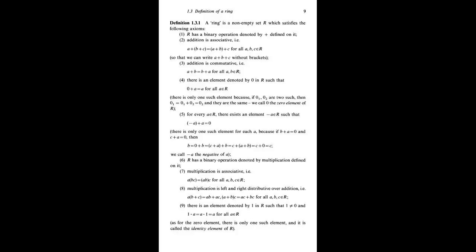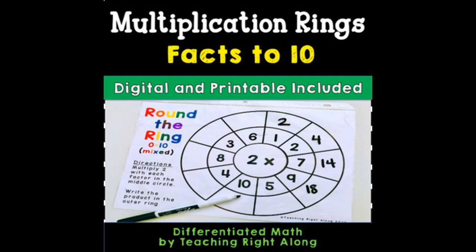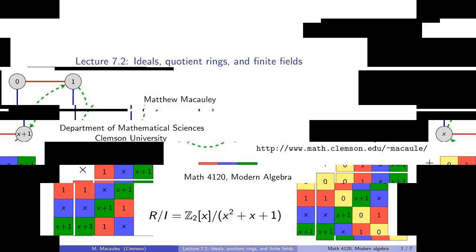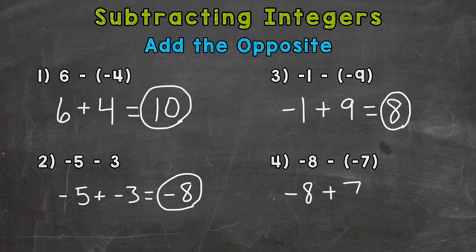A subset S of R is called a subring if any one of the following equivalent conditions holds: the addition and multiplication of R restrict to give operations S × S → S making S a ring with the same multiplicative identity as R, 1 ∈ S, and for all x, y in S.